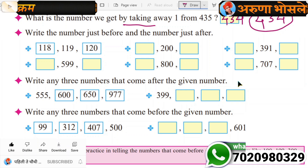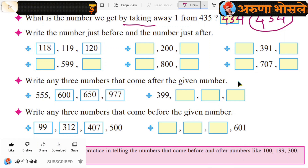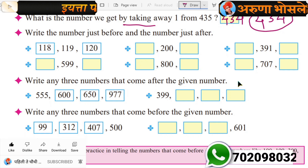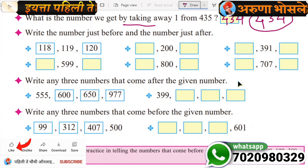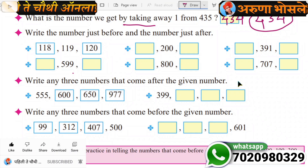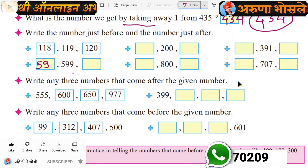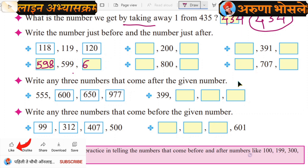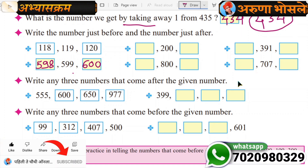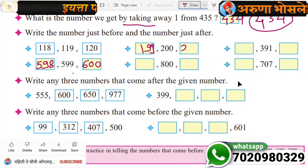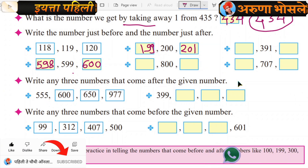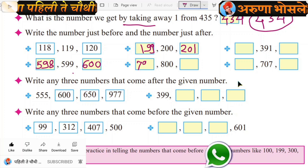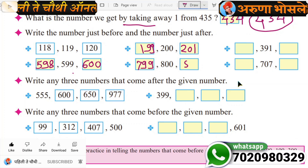Write the number just before and the number just after. 599 — which number is before? 598, and next number is 600. 200 — which number is before? 199, and next number is 201. 800 — before number is 799 and next number is 801.